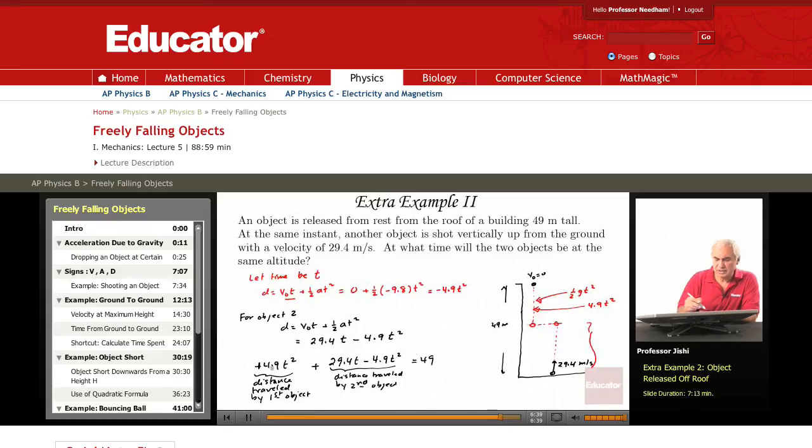This piece and this piece cancel out and we're left with T equals 49 over 29.4. You can divide both sides by 9.8, you get 5 over 3 seconds which is 1.67 seconds. That's the time when the two objects are at the same altitude.